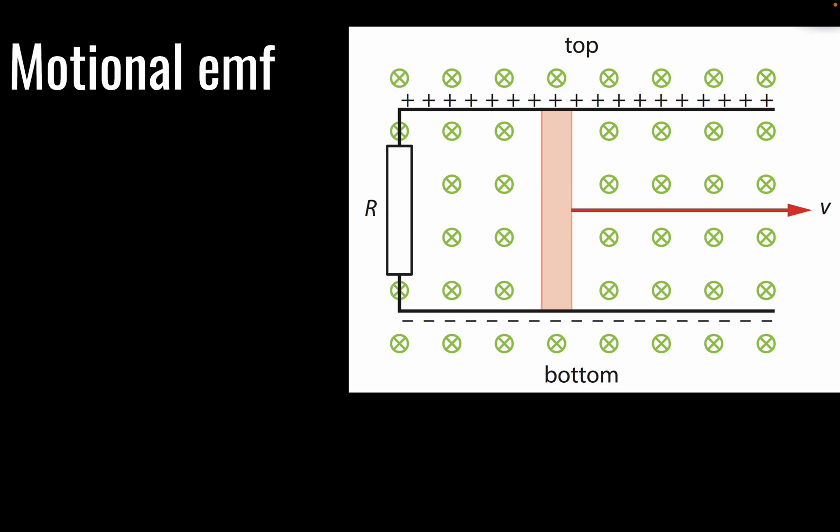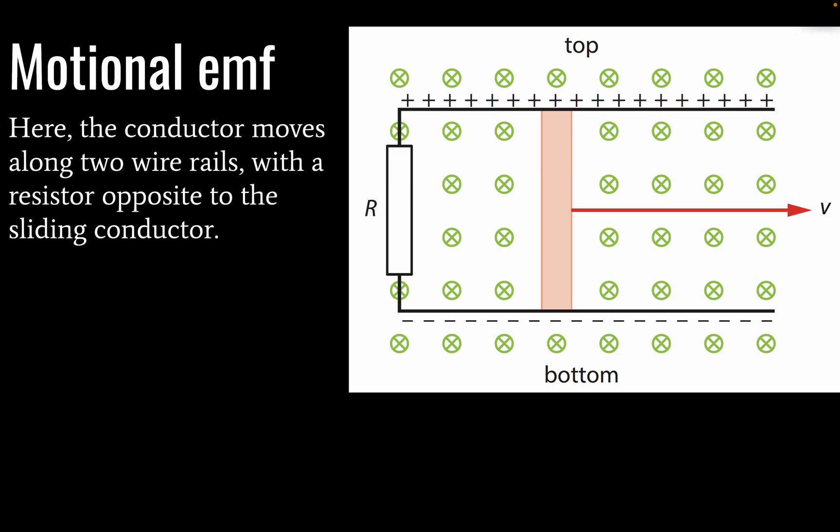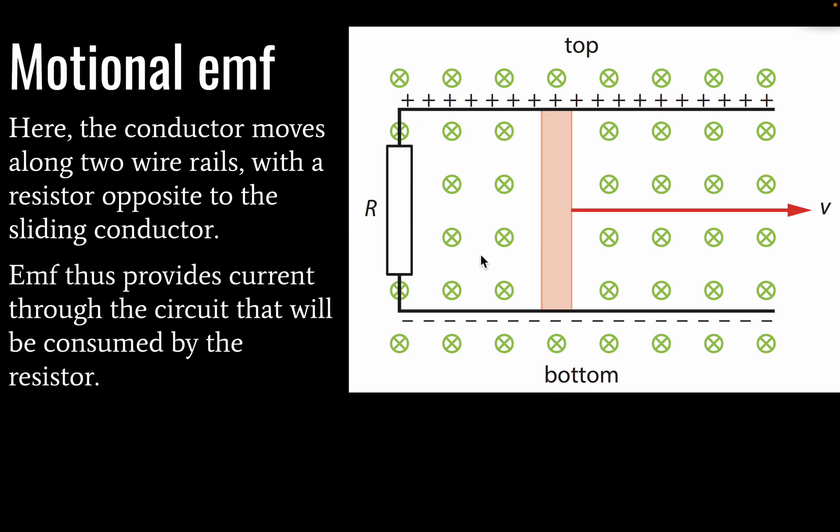We're going to look at motional EMF here and here we have a conductor moving along two wire rails. So this is our previous conductor and now we've connected it to a circuit and our circuit contains a resistor and we will have current and power consumed by this resistor.